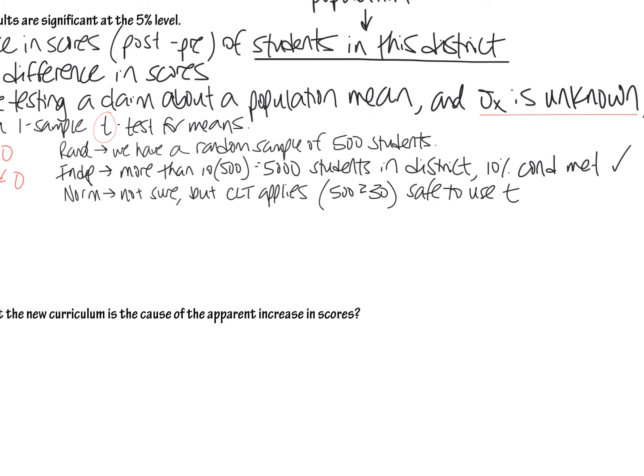So just remember the AP exam, you're trying to show off all your stats knowledge. And so just by saying CLT, okay, true, but let's make it really clear that you understand that our sample size is much bigger than 30, which is the cutoff for the CLT. And that means that it is safe to use T. We are using T again. It's a T test because the sigma X is unknown.